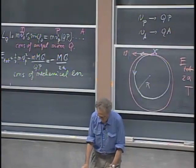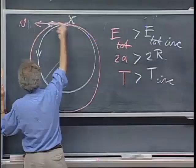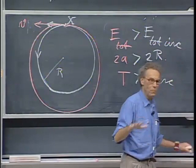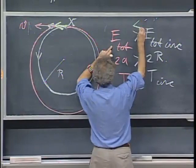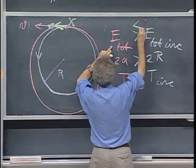If instead I fire the rocket to decrease my speed, I remove kinetic energy, total energy decreases, 2A becomes less than 2r, the orbital period is less than the circular period, and the new ellipse is smaller.